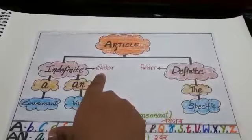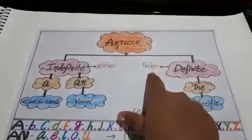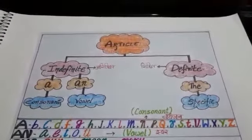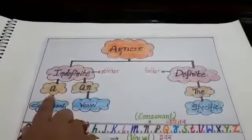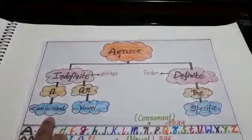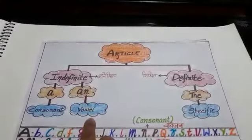Indefinite means anishchit. Definite means nishchit. As you can see, indefinite has two parts. A. An. A is used with consonant. An is used with vowel.